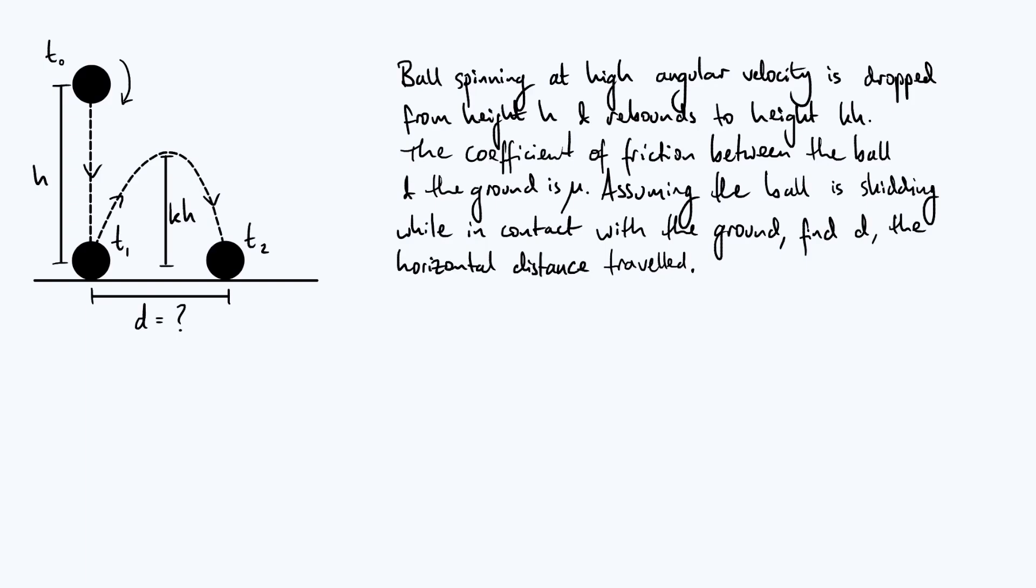So what we start with in this problem is a ball spinning at high angular velocity, the ball is rotating about a horizontal axis that passes through its center of mass, and we drop this ball from rest so that it falls a height h down to the ground, then there are going to be some energy losses due to the collision with the ground, and it's going to bounce back up, reach a maximum height of kh, where k is this dimensionless parameter less than one.